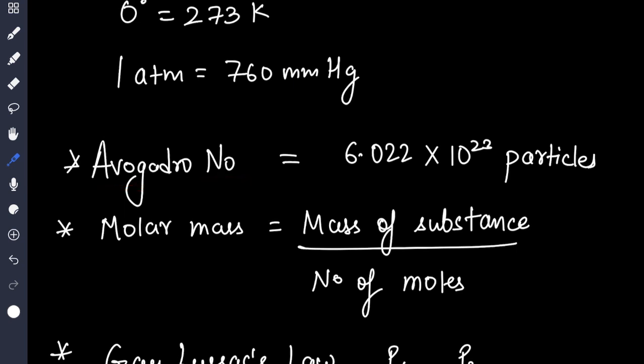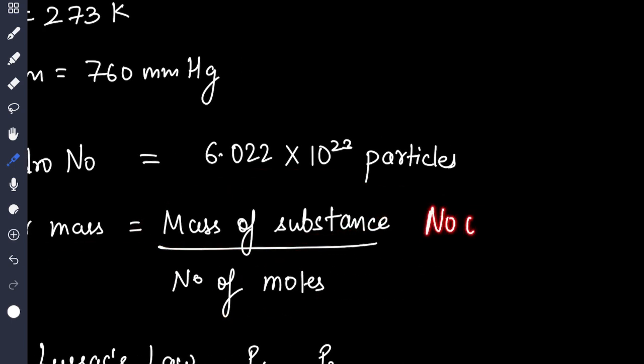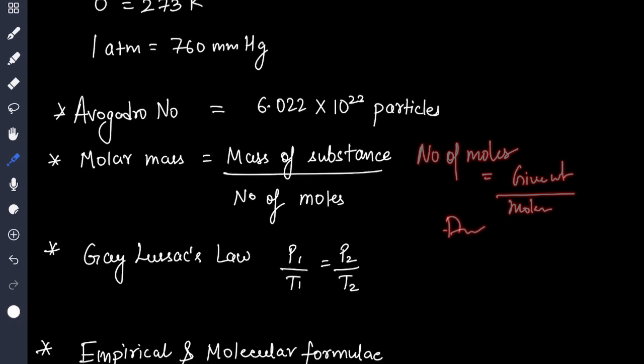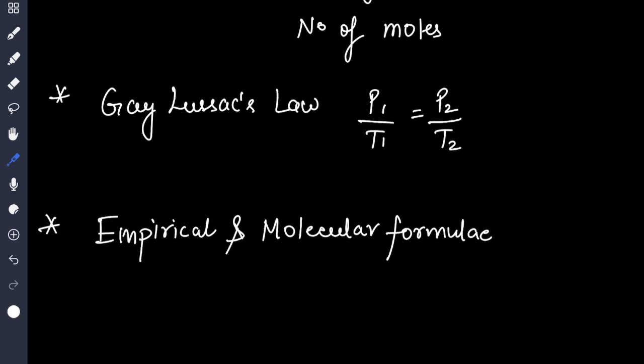Avogadro's number: 6.022 × 10^23. Molar mass is mass of substance upon number of moles. You very well know that we can calculate number of moles by three different methods: like given weight divided by molar weight, then through Avogadro's number. Gay-Lussac's law: P1/T1 equals P2/T2. Questions on empirical and molecular formula.